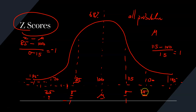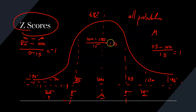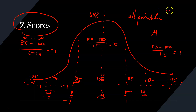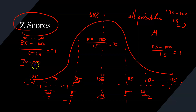At the mean, 100 minus 100 over 15 equals 0, so my Z score at the mean is 0. Going further out: 130 minus 100 divided by 15 equals 2, so the Z score at two standard deviations is 2. On the other side, 70 minus 100 divided by 15 is minus 30 over 15, which equals minus 2.